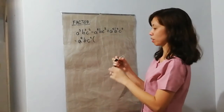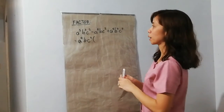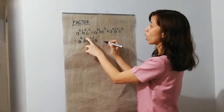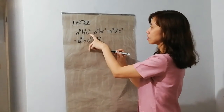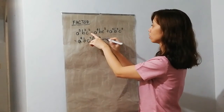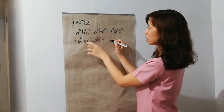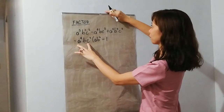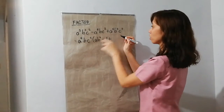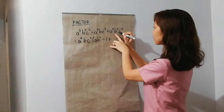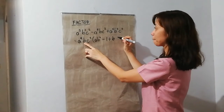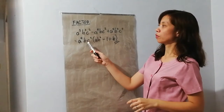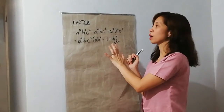Last, we have C and C. Lahat sila puro squared — lahat sila puro 2 ang exponent. So, yun na yung common factor. And then, we can divide. This term divided by the common polynomial factor. So, A — 5 minus 4 is A. B cubed divided by B — 3 minus 1 is 2. So, meron pa tayong dalawang B. C squared divided by C squared is 1. Minus, A to the 4th divided by A to the 4th is 1. B divided by B — pareho pala sila, so this term divided by this term is 1. B squared divided by B, meron pa tayong matitira — isang B. C squared divided by C squared is 1. So, our answer is A to the 4th, B, C squared times the quantity of AB squared minus 1 plus B.